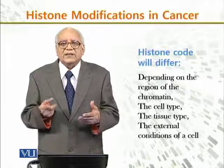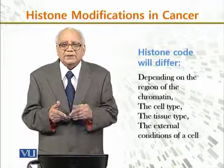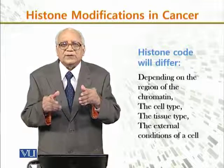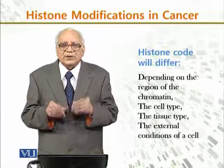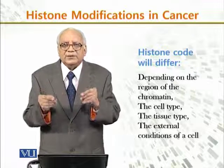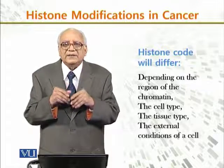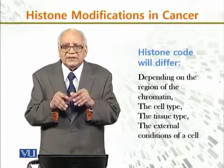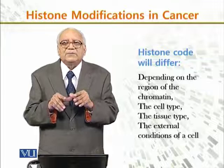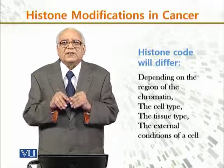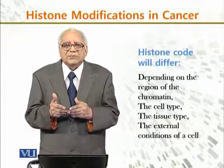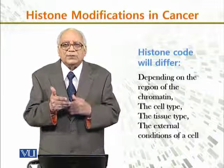The histone code will differ depending upon the region of the chromatin — which region of the chromosome's chromatin is involved — the cell type, the tissue type, and the external conditions of a cell. All these factors determine how the histone code varies.